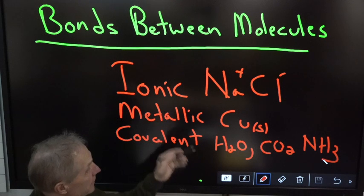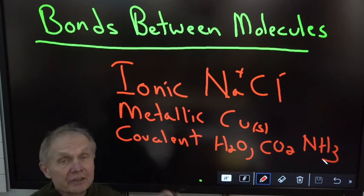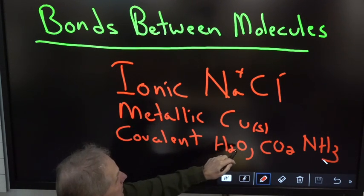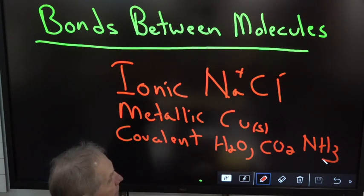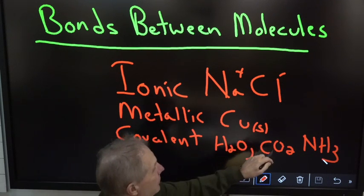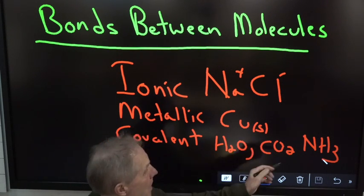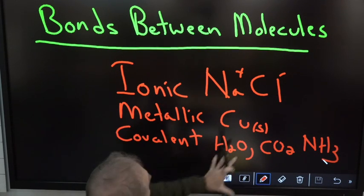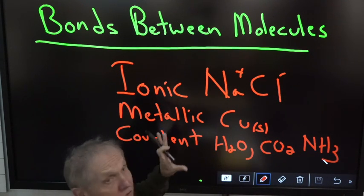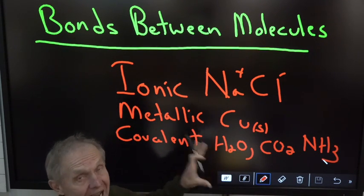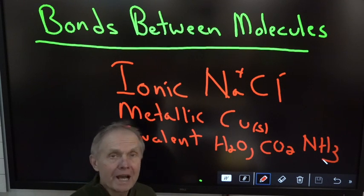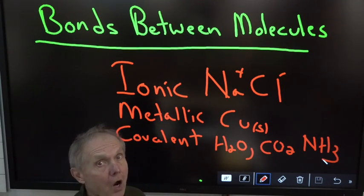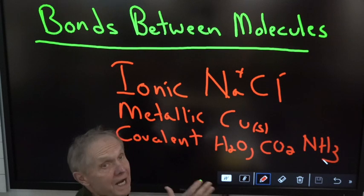These are all bonds between atoms. The water molecule is a bond between the oxygen atom and hydrogen. Carbon dioxide involves oxygen and carbon. Ammonia involves nitrogen and hydrogen. These are all bonds between atoms. Now, the bonds between molecules are way, way different.